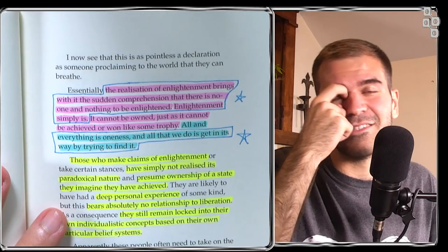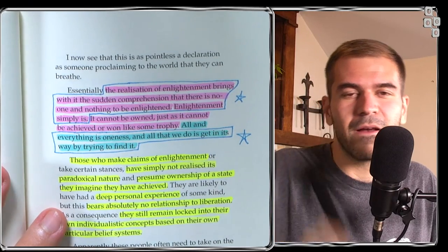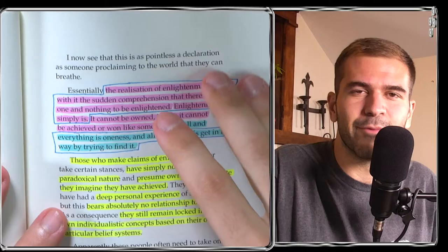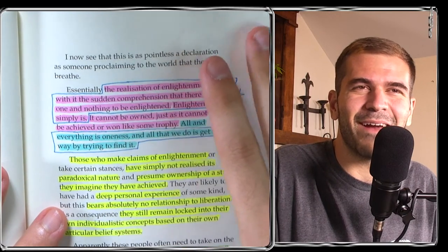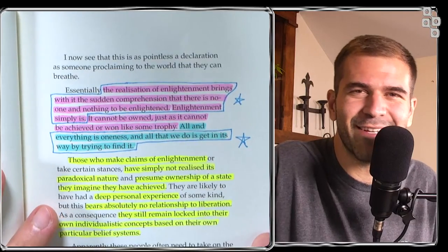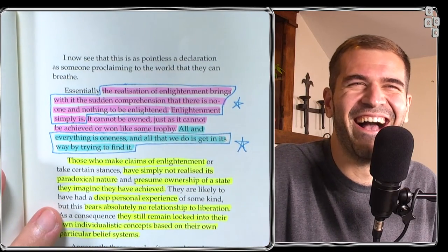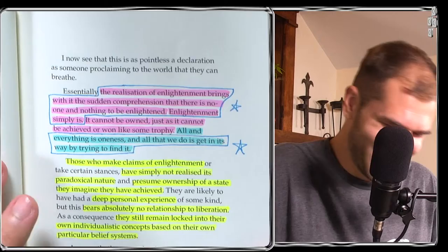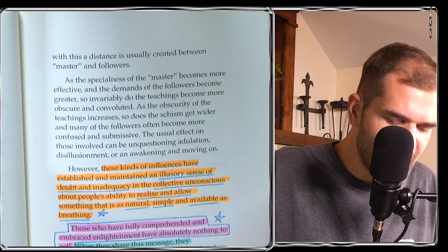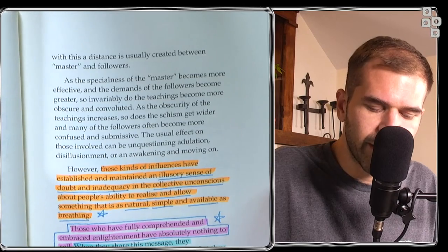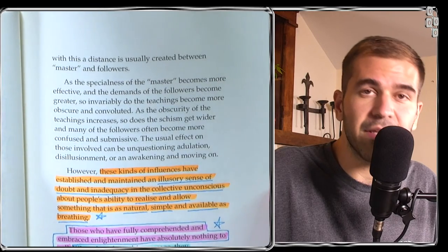The realization of enlightenment brings with it the sudden comprehension that there is no one and nothing to be enlightened. Enlightenment simply is. Everything is oneness, and all that we do is get in its way by trying to find it. This reminds me of that Adi Shankara quote: I am in my village, but need a road to get to my village. I am oneness, but I will get in my own way to find oneness.